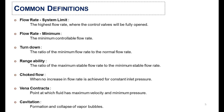The fourth definition is rangeability: it is the ratio of maximum stable flow rate to the minimum stable flow rate. The next definition is choked flow — dead flow — when there is no increase in the flow rate with constant inlet pressure. The second-to-last definition is vena contracta: the point where the velocity is maximum and pressure is minimum. The last definition is cavitation, which is the formation and collapse of vapor bubbles.